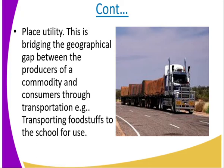For example, bread is made in a factory, and that bread is supposed to be used by the consumer who is not within that factory — the consumer gets that bread the next day. So that is place utility.